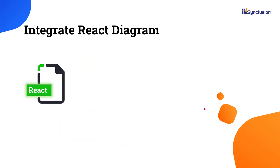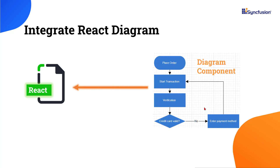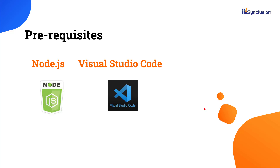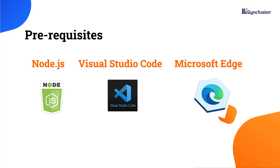In this video, you will learn how to create a simple React application and add the Syncfusion React Diagram Component. To create a basic React application, it is necessary to install Node.js and React. I will be using Visual Studio Code as my editor and show the output in a supported browser.